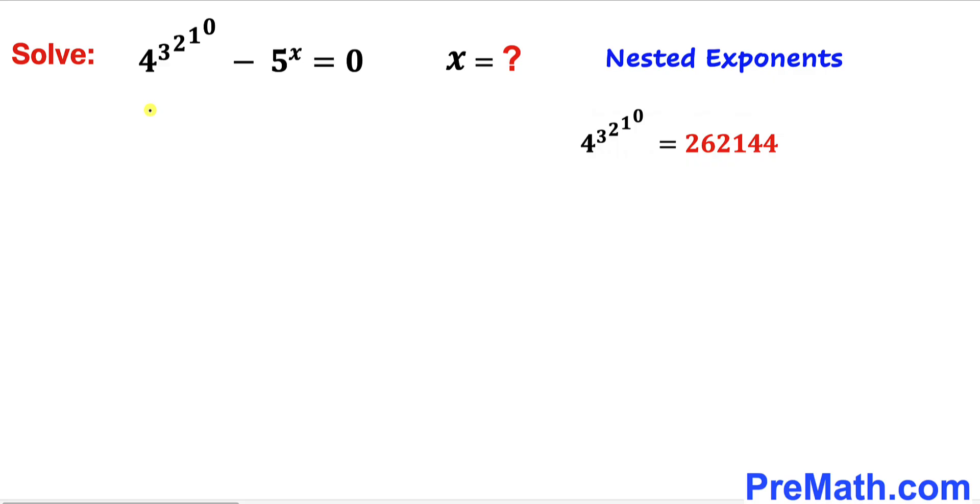So therefore this equation could be written as 262,144 - 5^x = 0.